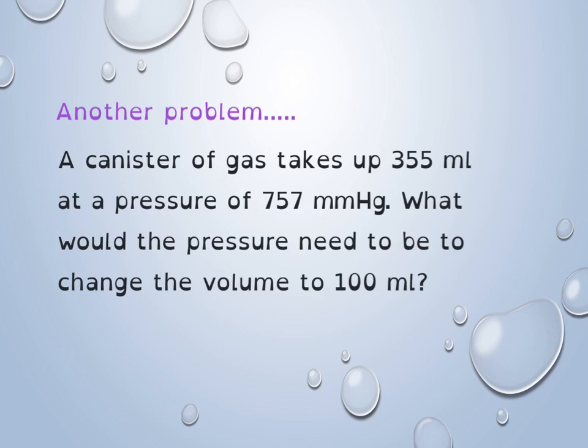For this next problem: a canister of gas takes up 355 milliliters at a pressure of 757 millimeters of mercury. What would the pressure need to be to change the volume to 100 milliliters? Solve this problem and submit your work and answer to the assignment prompt in Schoology for homework. Thank you.